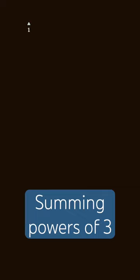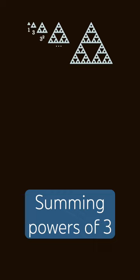We can make sense of the powers of 3 by starting with 1 triangle, taking 3 copies to form this triangle with 3 small triangles, taking 3 copies of that to represent 3 squared, and so on, each time taking 3 copies of the previous diagram to produce the next power of 3.